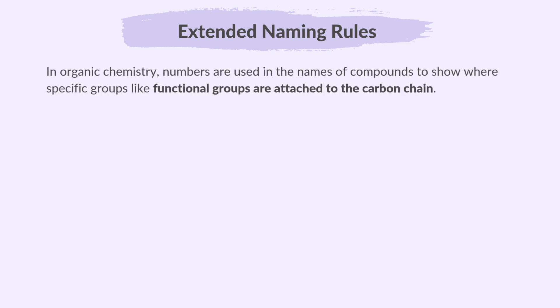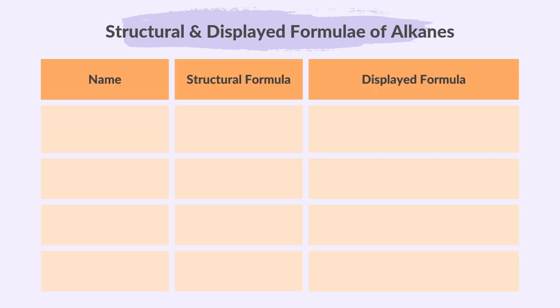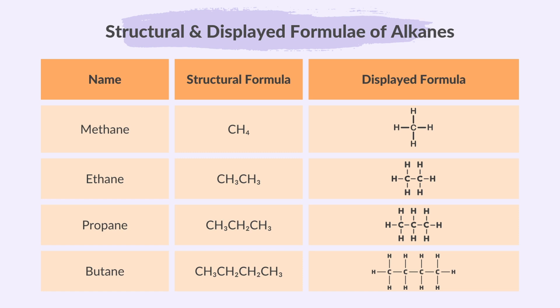Let's go a bit further in naming organic compounds. In organic chemistry, numbers are used in the names of compounds to show where specific groups, like functional groups, are attached to the carbon chain. These numbers help ensure clarity, especially when different arrangements of atoms — that is, isomers — are possible. For alkanes, we don't have to do this because alkanes do not have a functional group, therefore there's no numbering in alkane names. Here are the structural and displayed formulas for alkanes containing up to four carbon atoms per molecule.